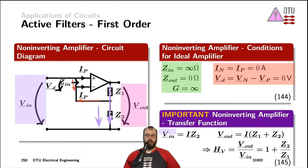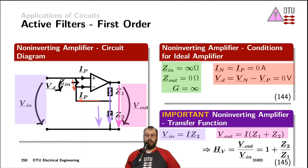Ohm's law across Z2 gives us an expression for the input voltage, and the output voltage is applied directly across Z1 and Z2 with the same current flowing through both. Dividing those two voltages gives the voltage transfer function of the non-inverting amplifier with an ideal op-amp: one plus Z2 divided by Z1.